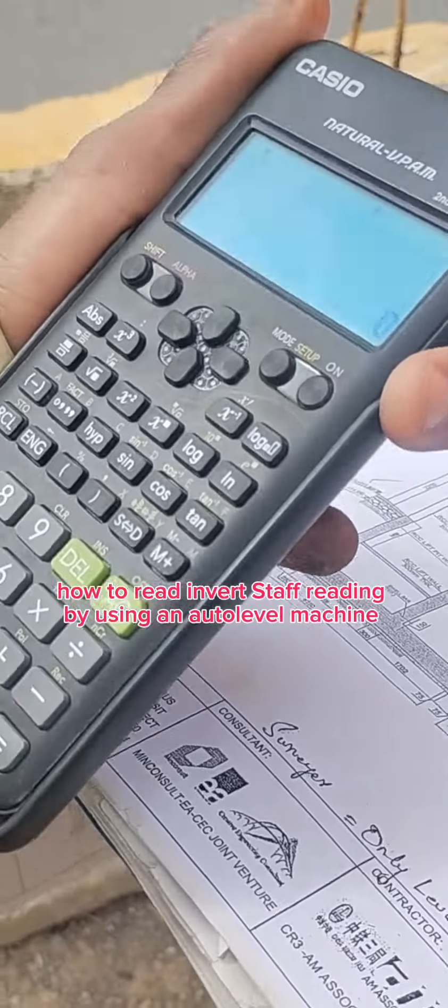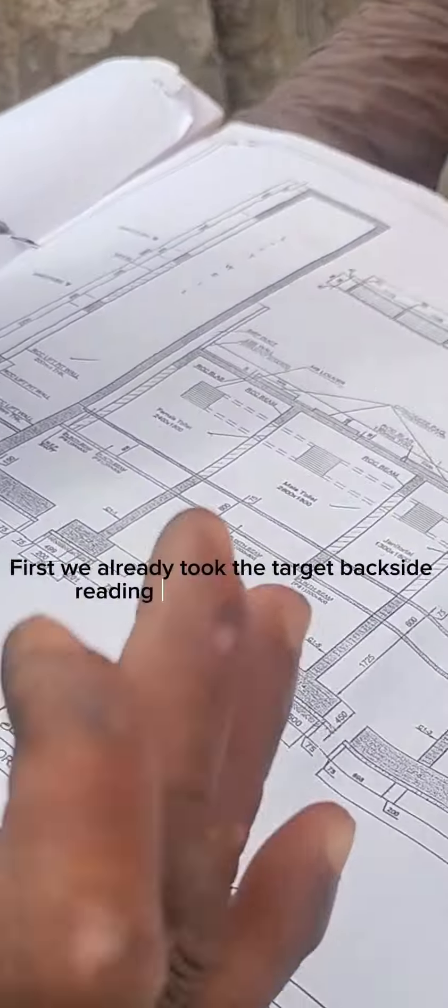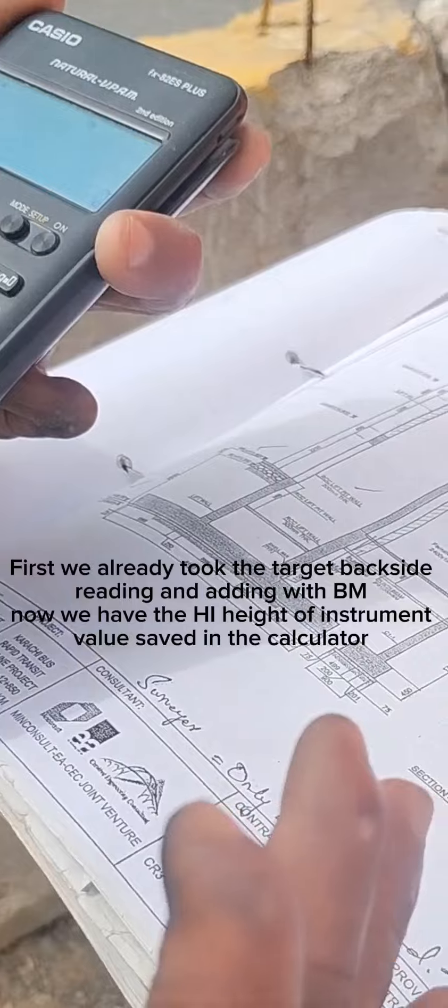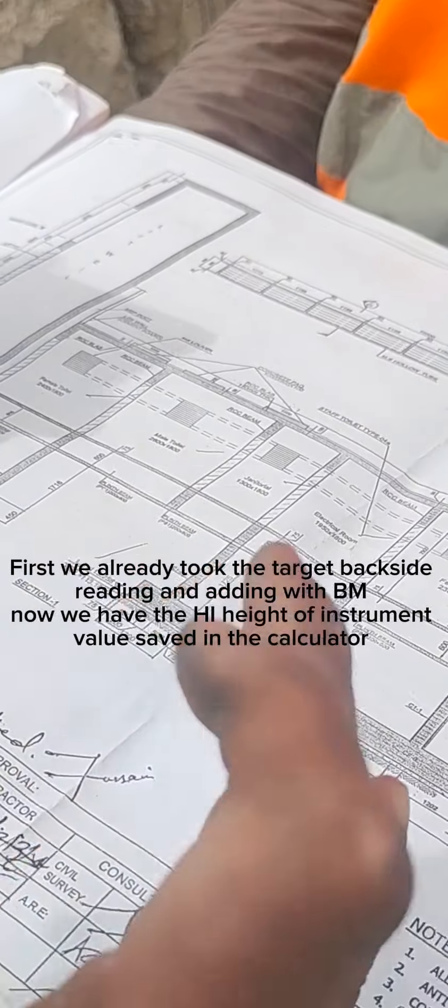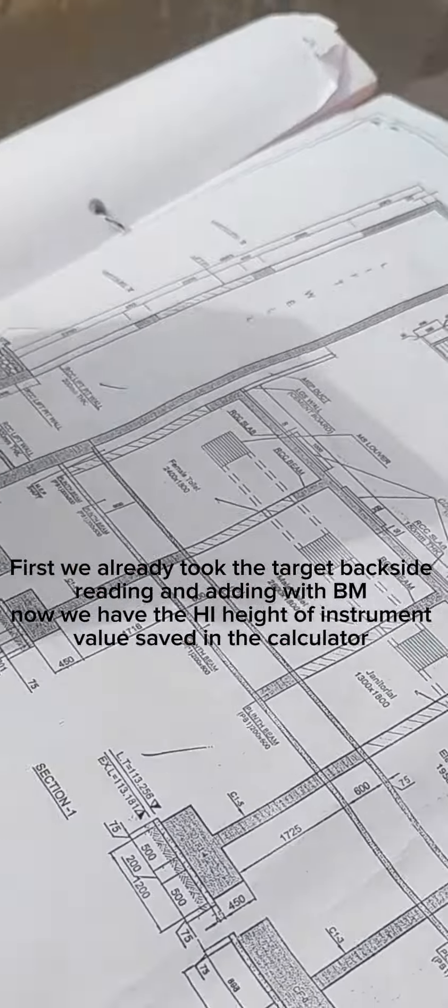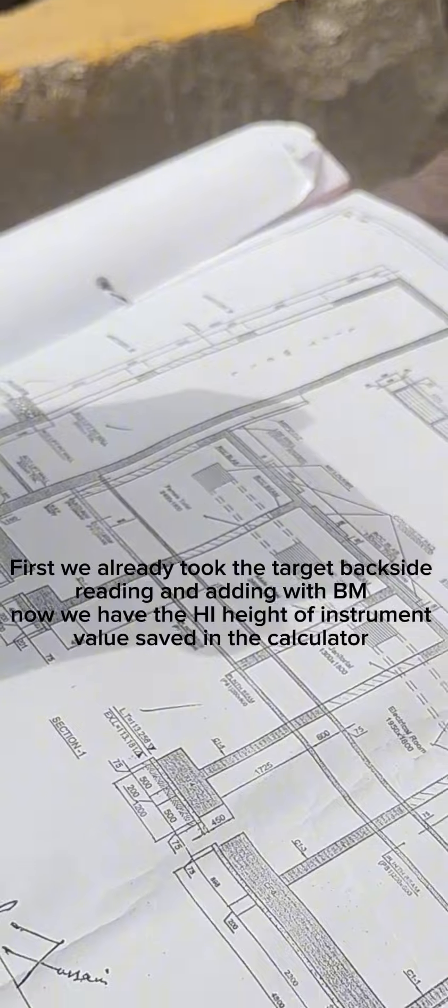How to read InvertStaff reading using an auto-level machine. First, we already took the target backside reading and added it with BM. Now we have the HI height of instrument value saved in the calculator.